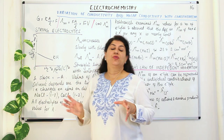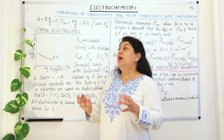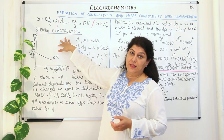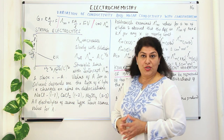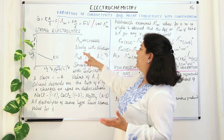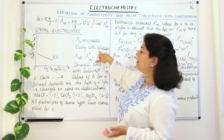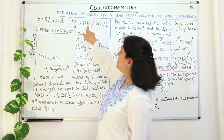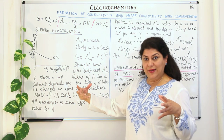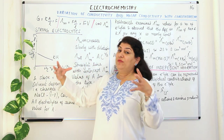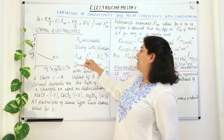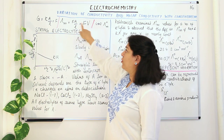Now let us move on to how the conductivity or molar conductivity of strong electrolytes is affected by the change in concentration. Molar conductivity increases slowly with dilution for a strong electrolyte. Why does it increase? Because as you increase the dilution, the volume will increase, which means concentration is decreasing. If volume increases, molar conductivity will also increase according to this relation.